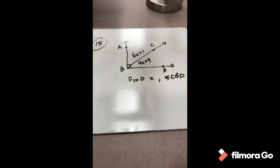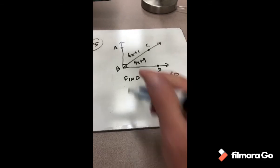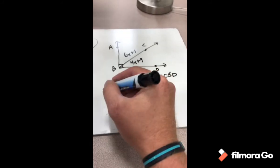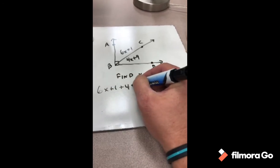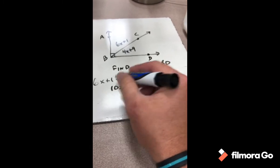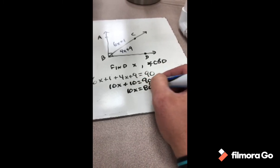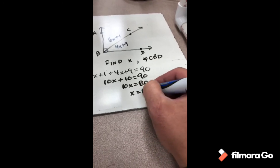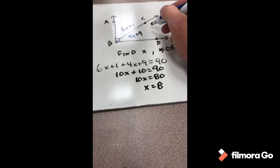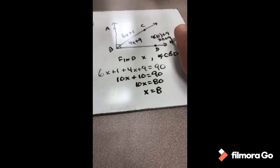For problem 15, find the value of x and angle CBD. We're told angle ABD is a right angle, so angles ABC and CBD are complementary. Setting up: (6x + 1) + (4x + 9) = 90. Combining: 10x + 10 = 90, so 10x = 80 and x = 8. For angle CBD: 4(8) + 9 = 32 + 9 = 41 degrees.